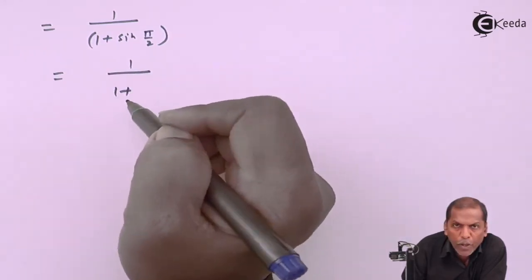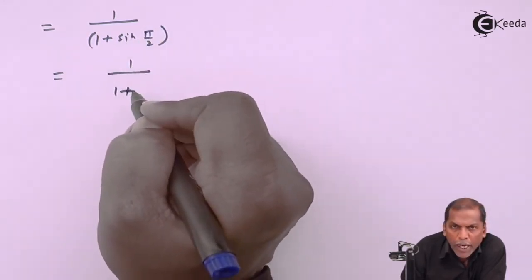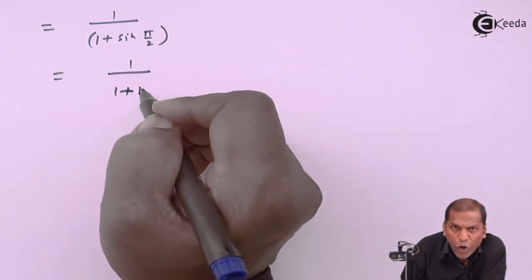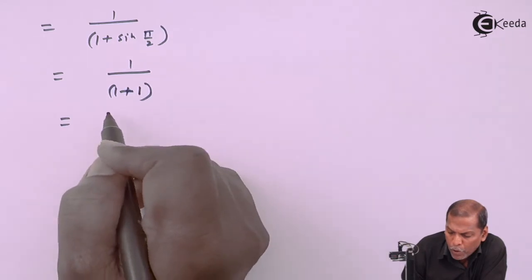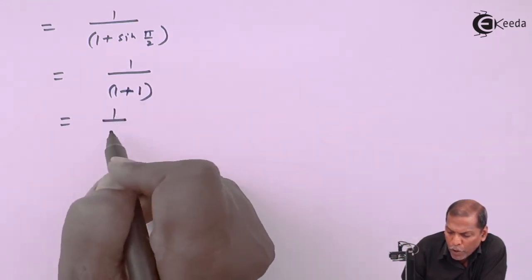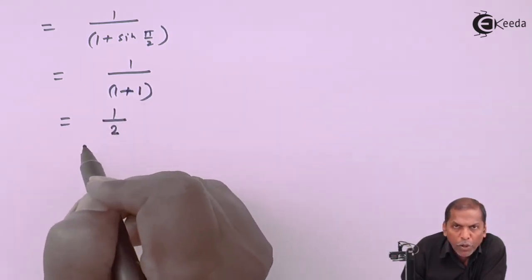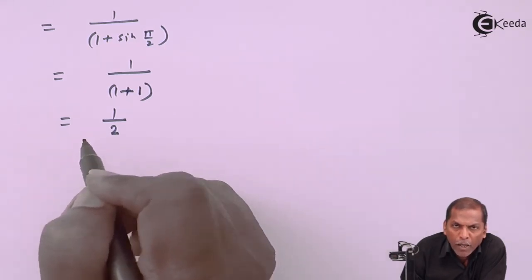over (1 + sin x). Now sin(π/2), that is sin 90°, gives 1 from the trig table. So this equals 1/(1 + 1) = 1/2. So 1/2 is the final answer.